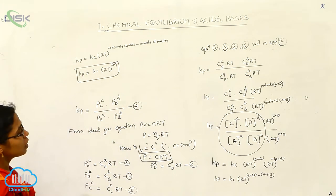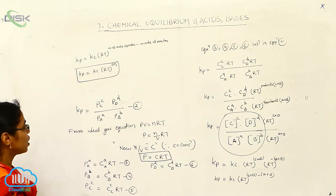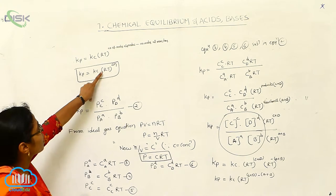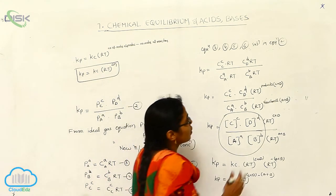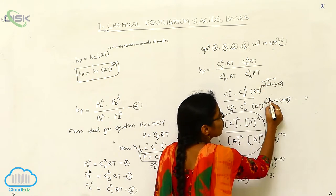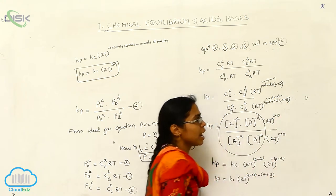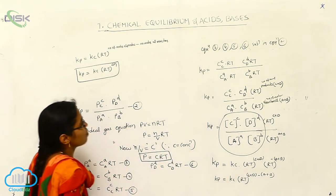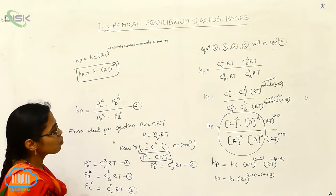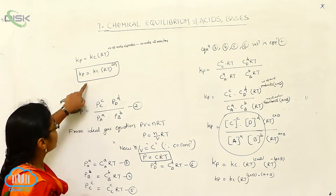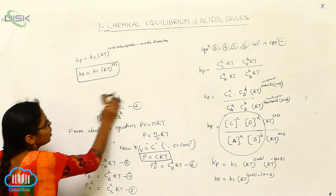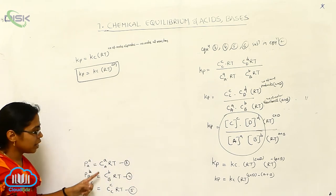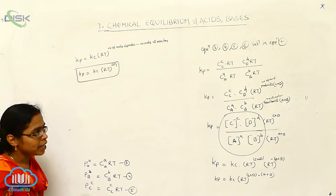For the reaction A plus B gives C plus D, I have done this complete derivation to gain the relationship Kp is equal to Kc · R·T to the power of delta N. Here, the number of moles of products corresponds to C plus D, and the number of moles of reactants corresponds to A plus B. These equations are derived from the ideal gas equation.